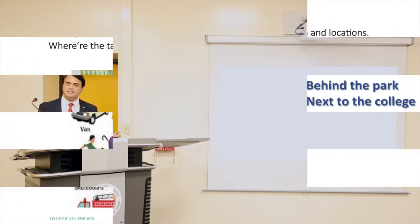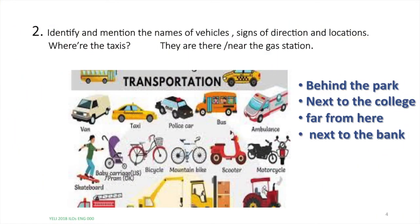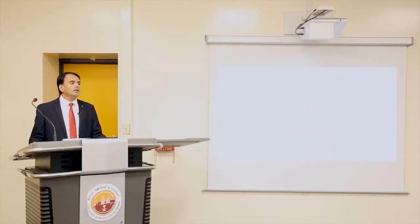The second objective of these two weeks is that students should be able to identify and mention the names of different vehicles, signs of directions, and locations. For example, they should be able to talk about vehicles and transportation like cars, buses, trains, aeroplanes, etc. And they should be able to explain where different things are. For example: where are the taxis? The answer can be: they are there, or they are near the gas station, or they are behind the park, next to the college, far from here, next to the bank. Students should be able to talk about different transportation systems and their locations.